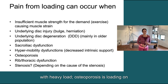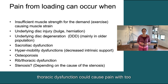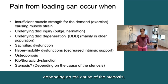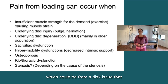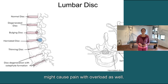Osteoporosis is loading on the bones that we don't want. Rib thoracic dysfunction could cause pain with too much load there as well. And stenosis, depending on the cause of the stenosis — which could be from a disc issue — might cause pain with overload as well.